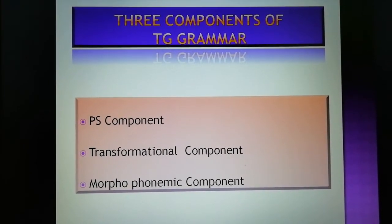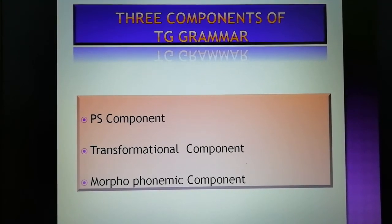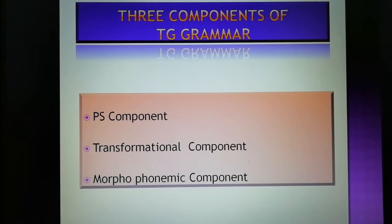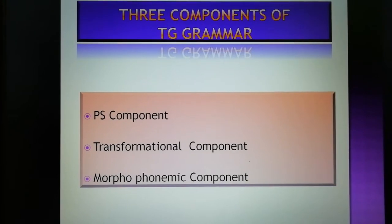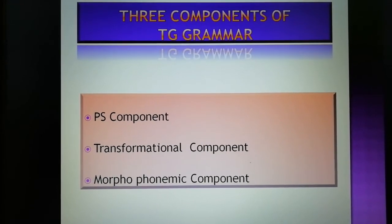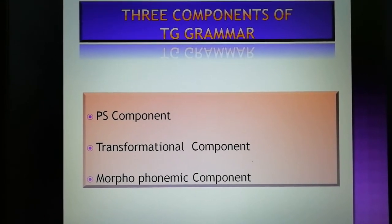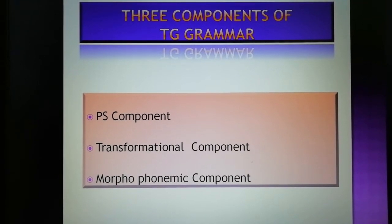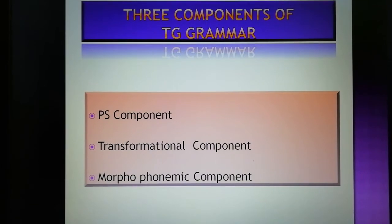The second component consists of transformation rules or T-rules. Using these rules, kernel sentences can be changed into passive, negative, or interrogative sentences. There are various transformational rules like negative transformation, interrogative transformation, passive transformation, etc. Thus, from a given kernel sentence, applying various transformational rules, we can generate any number of complex or sophisticated sentences.